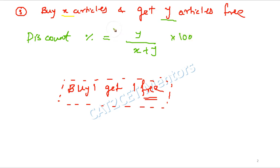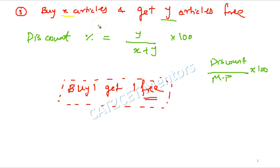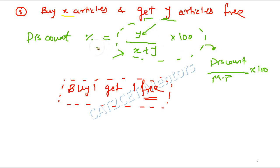This formula arises from the general percentage discount formula: discount upon marked price multiplied by 100. The discount given is the cost of Y free articles, and the net marked price is the cost of X articles plus Y articles. So Y upon (X plus Y) times 100 directly gives you the discount percentage, saving time over using the general formula.